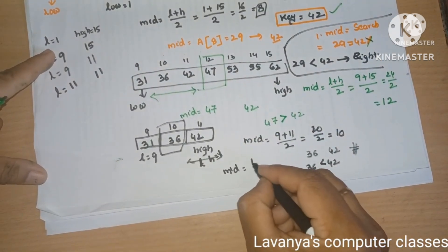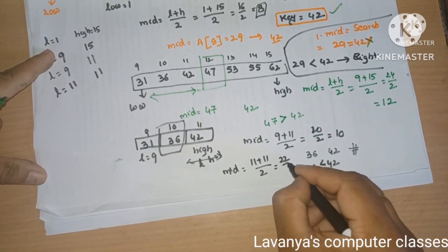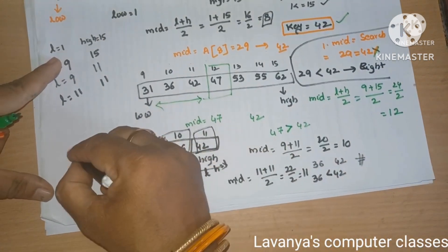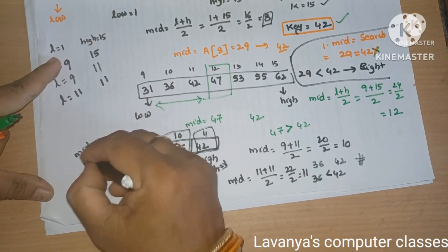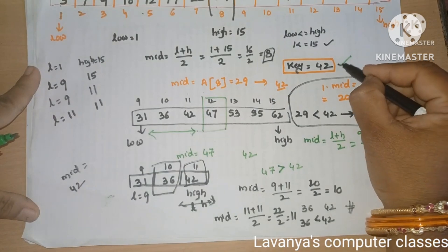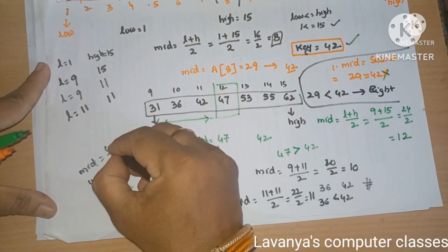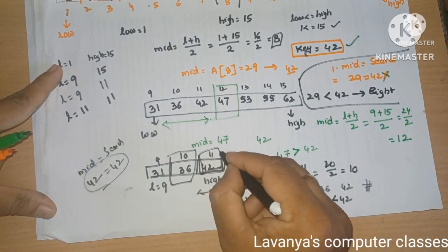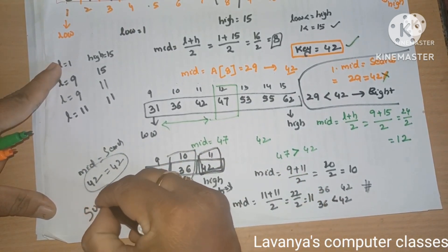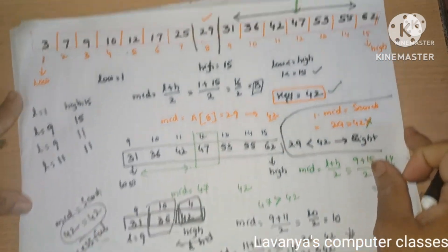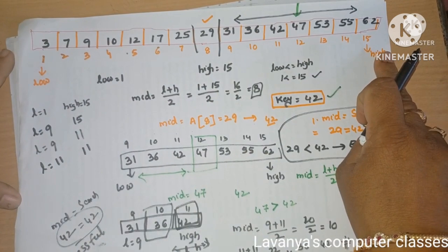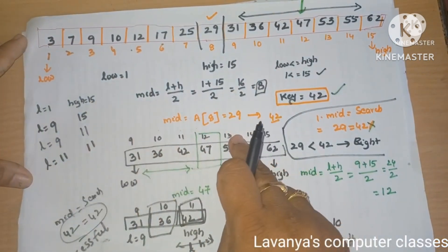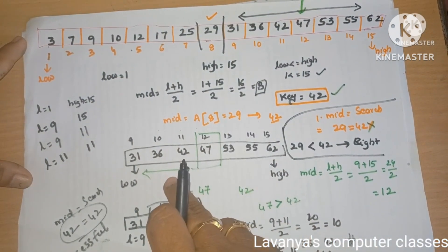Calculate mid again: mid equals (11 plus 11) divided by 2 equals 22 divided by 2 equals 11. So the middle element is at position 11 — that is 42. What is your search element? Search element is also 42. So mid equals 42, 42 equals 42 — you are getting the element successfully at the 11th position. It is a successful search. Out of 15 elements, within just 4 iterations we found the element. This is the main advantage of binary search.